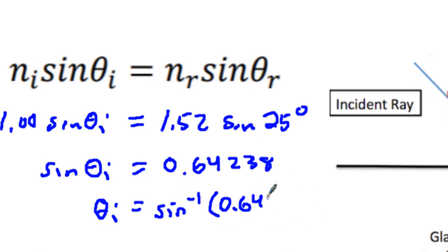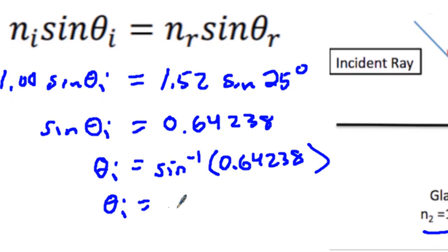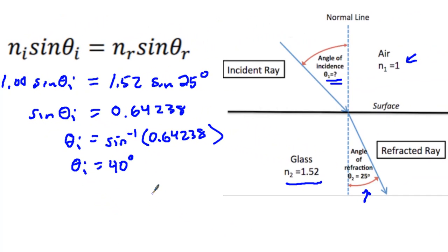And so we have .64238 right there. And when you do that on your calculator, make sure you try that on your calculator, you end up getting approximately 40 degrees. And you're going to be getting 39.99 and something like that. But it's about 40 degrees. And you can see that looks good at 40 degrees right there. And that is our answer for theta i.